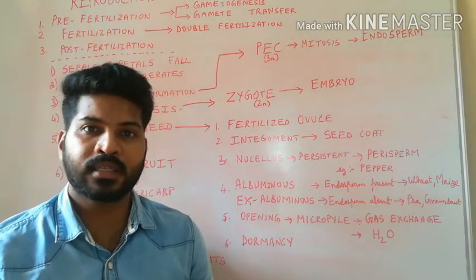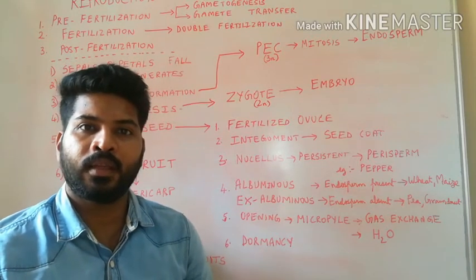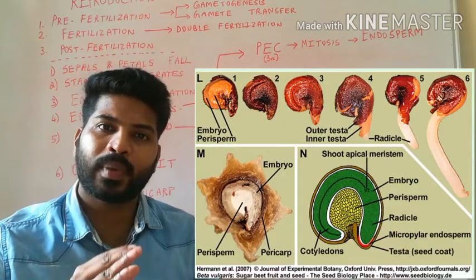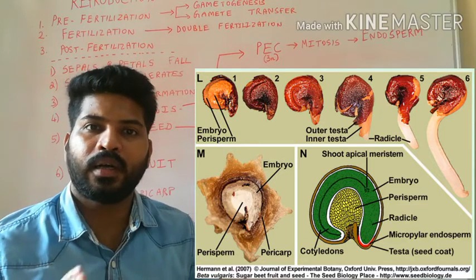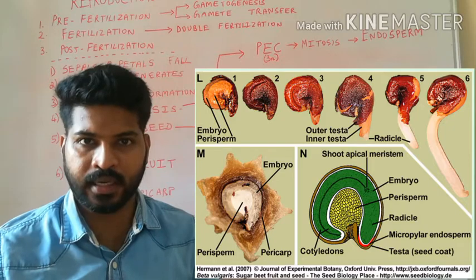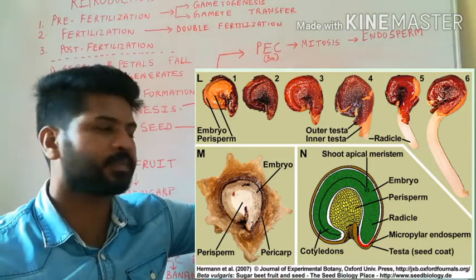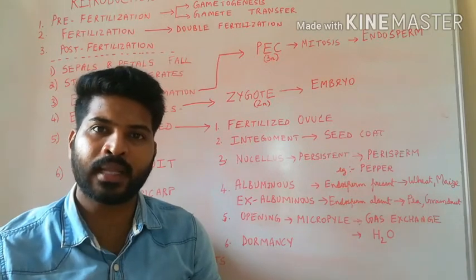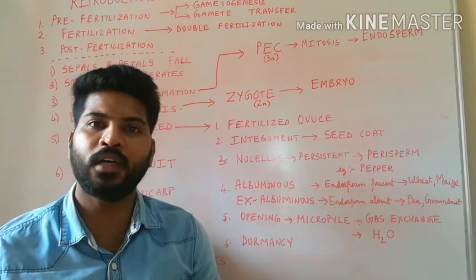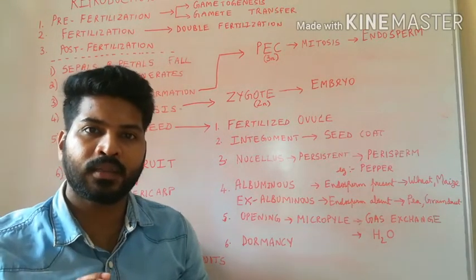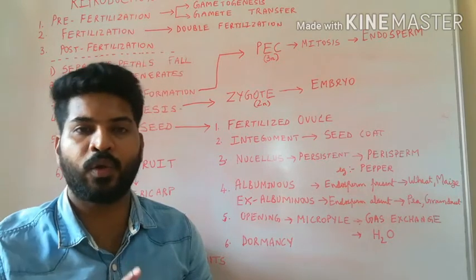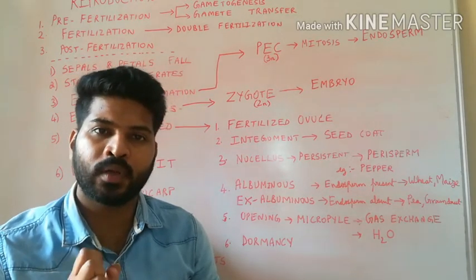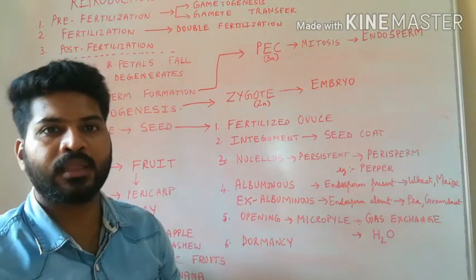Sometimes in seeds of pepper and beet, the nucellus is also present as a covering. The remnant persistent nucellus present in the seed is known as perisperm. If you look at the seed under the microscope, you will find a small opening — a pore — that is nothing but the micropyle present in the ovule. It is through this micropyle opening that the embryo germinates and comes out. Not only that, gaseous exchange takes place through the micropyle and water is also absorbed by the micropyle.